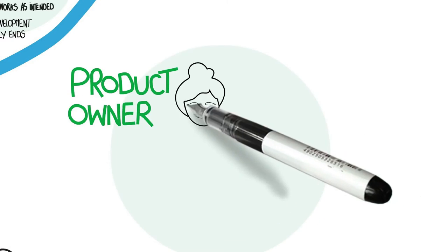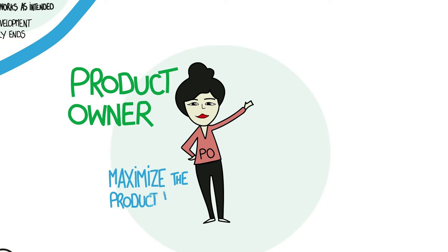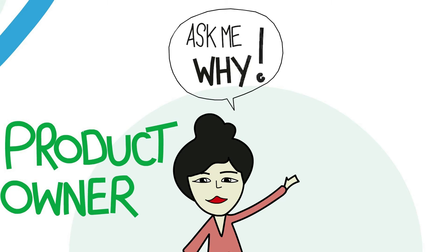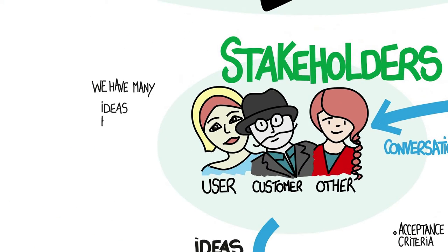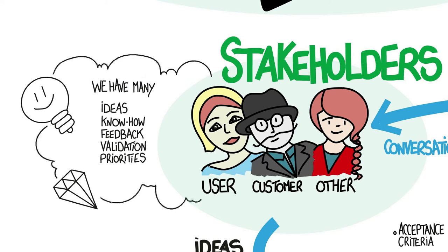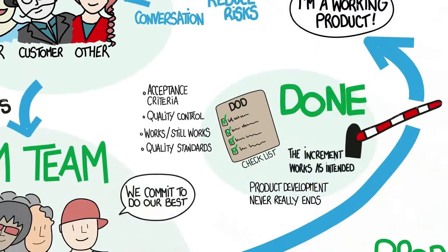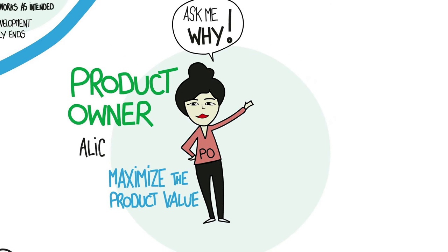Here is the Product Owner. She is accountable for maximizing the value of the product resulting from the work of the Scrum Team. Her key question is why, and it shows up frequently in her conversations with stakeholders and with the rest of the team. Stakeholders are tremendous sources of ideas, know-how, feedback, validation, and priorities. The challenge is that stakeholders can be noisy, have differing priorities, and have other things to do — committees can be notoriously slow in making decisions. Let's call this the alignment problem.